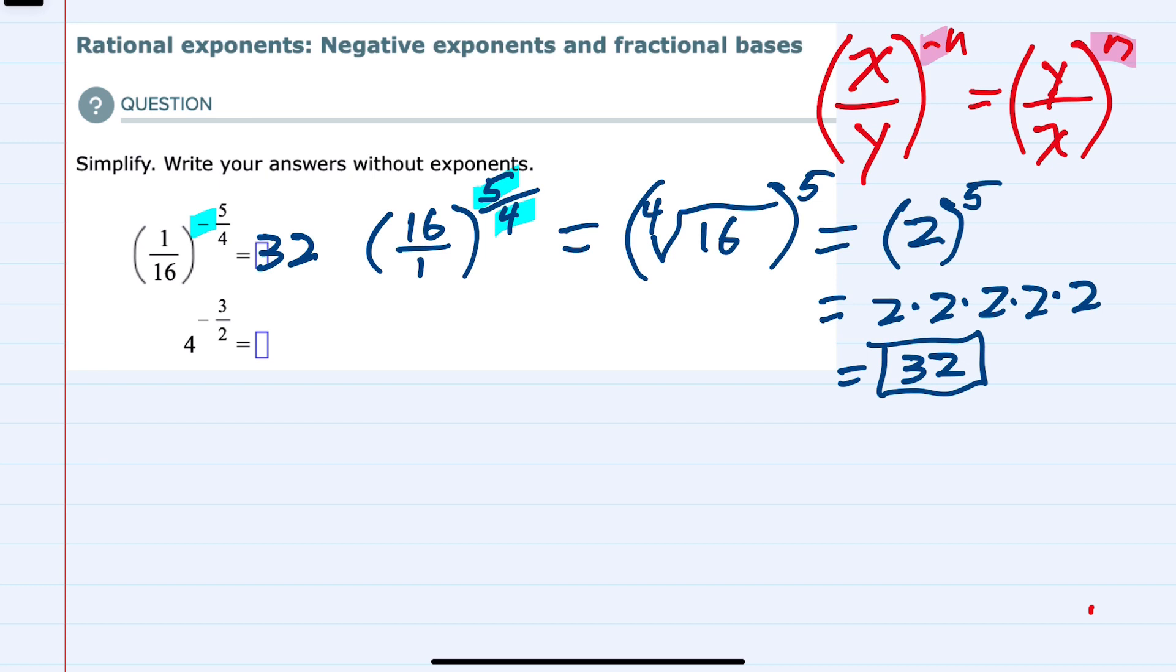For the second example, we're again going to get rid of the negative by flipping the fraction. 4 can be written as 4 over 1, so I would make that 1 over 4, drop the negative on the exponent which is now a positive 3/2, and this can now be written as the square root of 1/4 raised to the 3rd power.